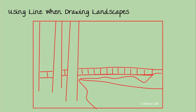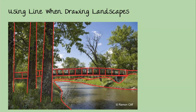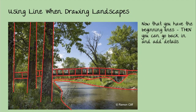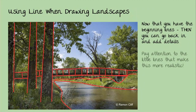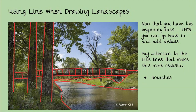Once you have those beginning lines, go back in and add details. This makes it less overwhelming to draw all the little details. Pay attention to the smaller lines that make the sketch more realistic. I like to start with the biggest, most bold, prominent lines, then work toward medium-size lines, then smaller lines. When adding details, I look at where the branches of those trees are, where the leaves are, and whether there is grass and plants — I can see a whole bunch in between the trees.